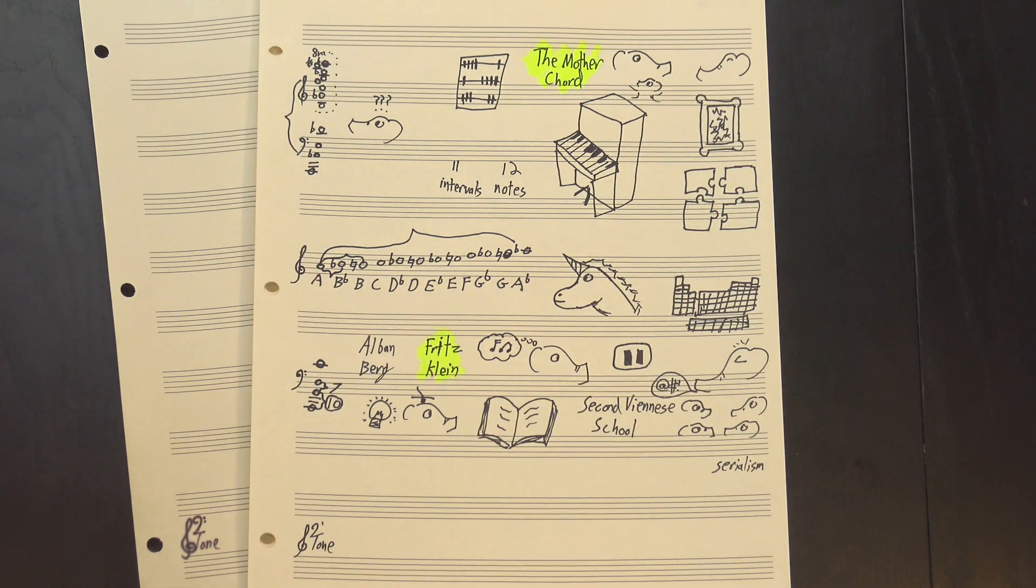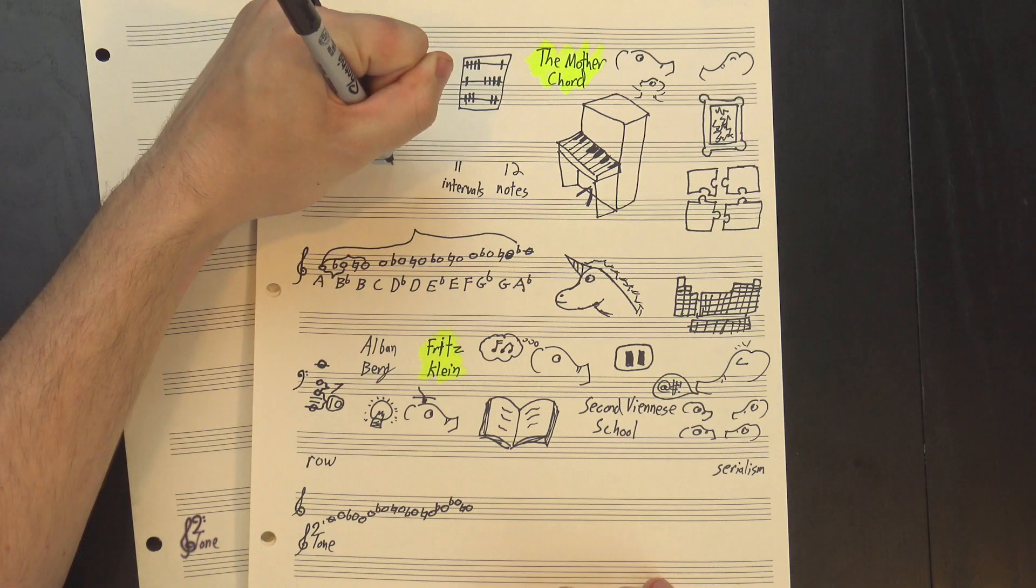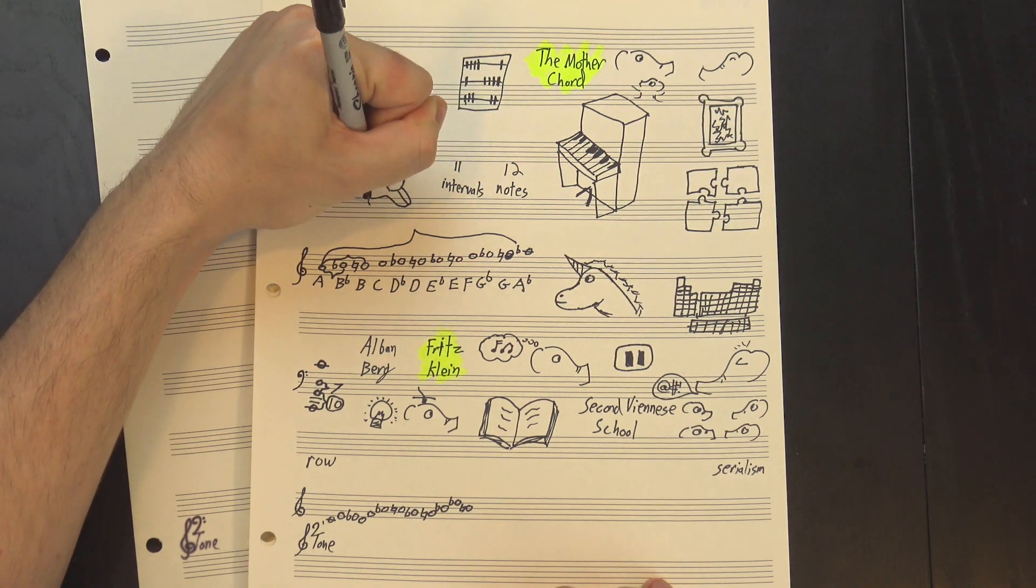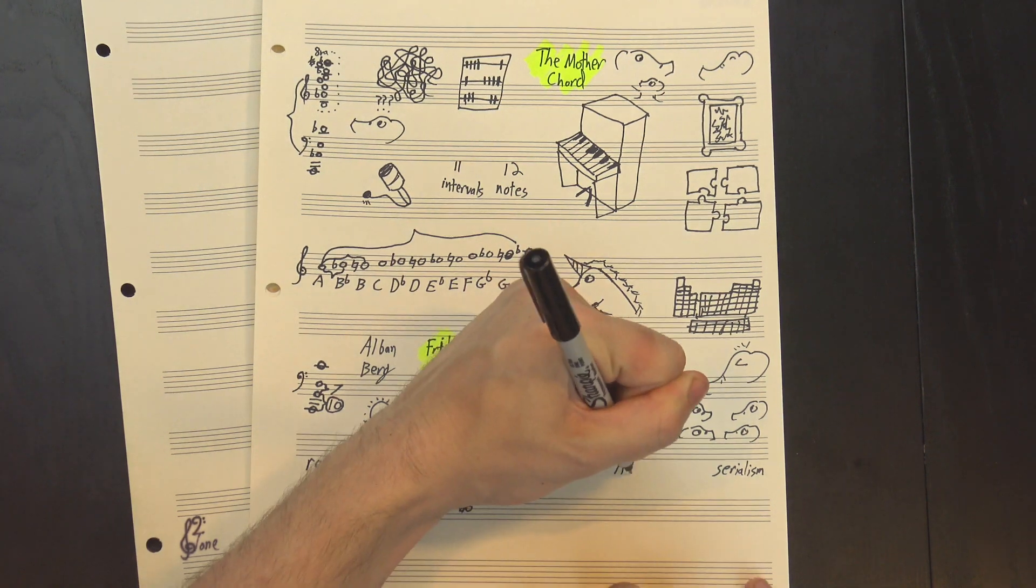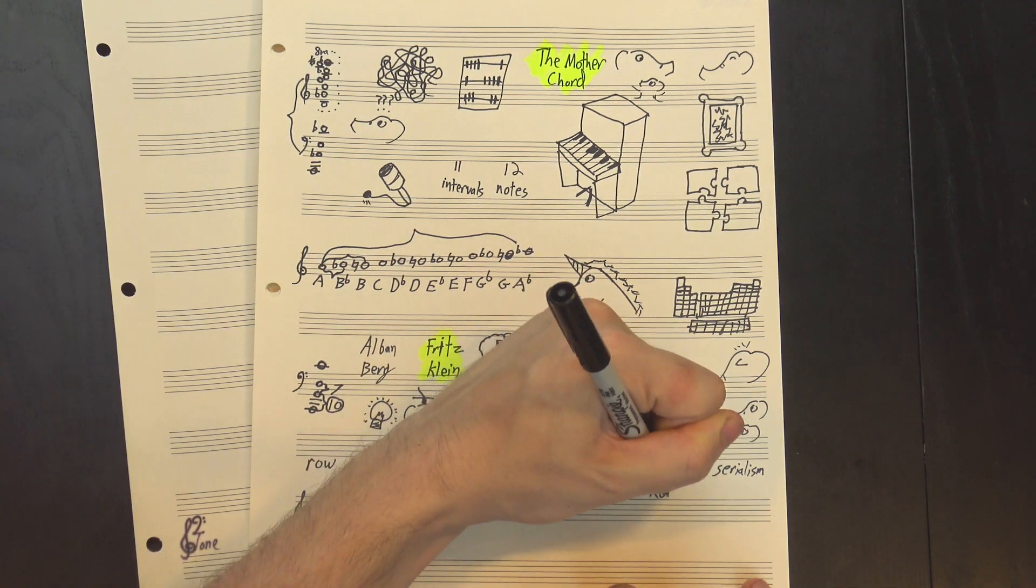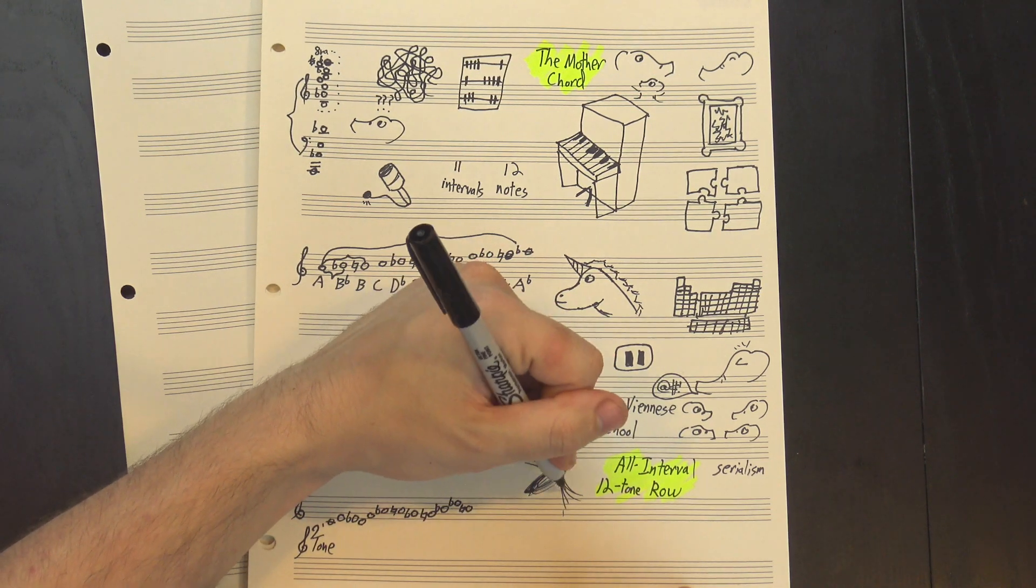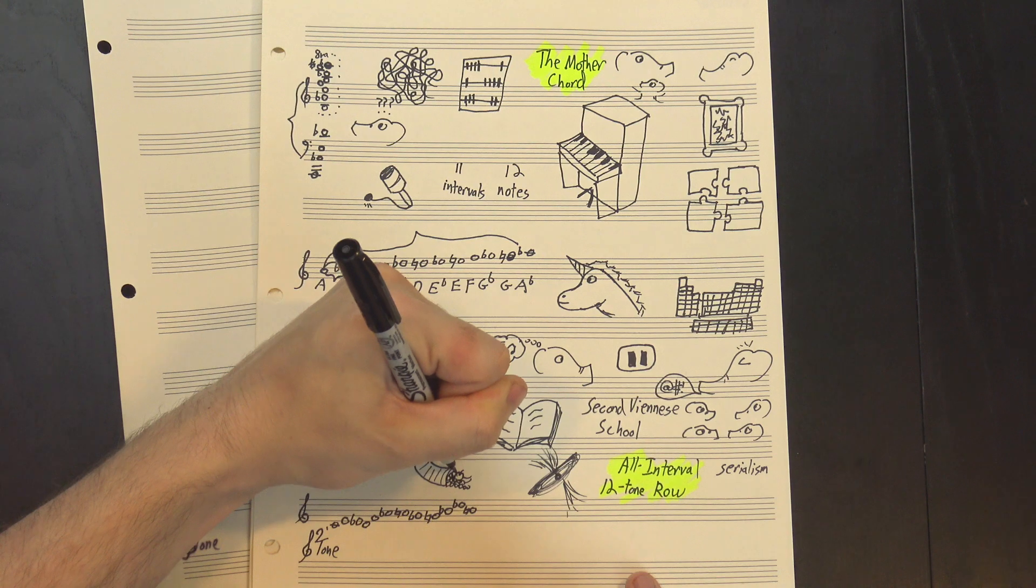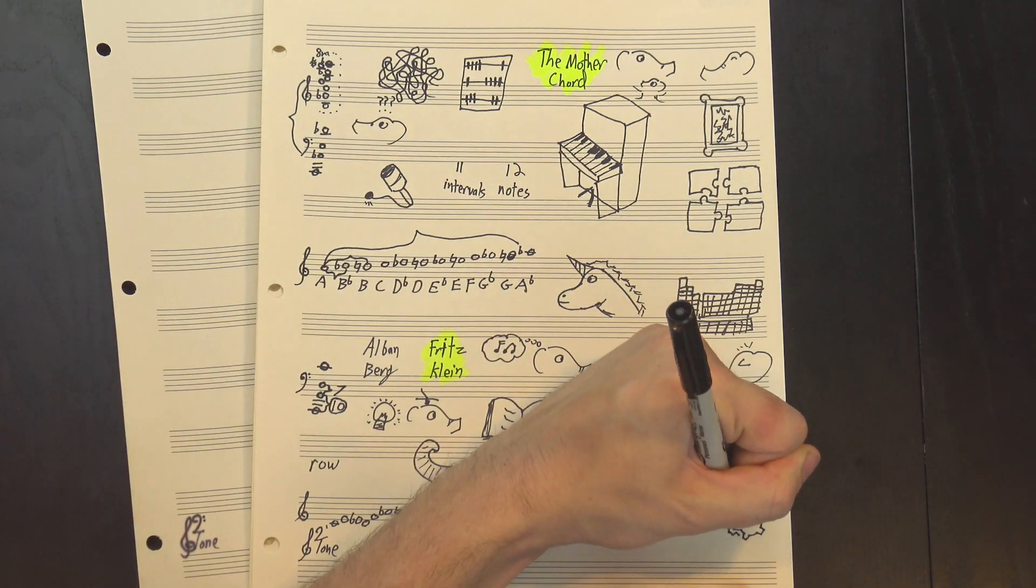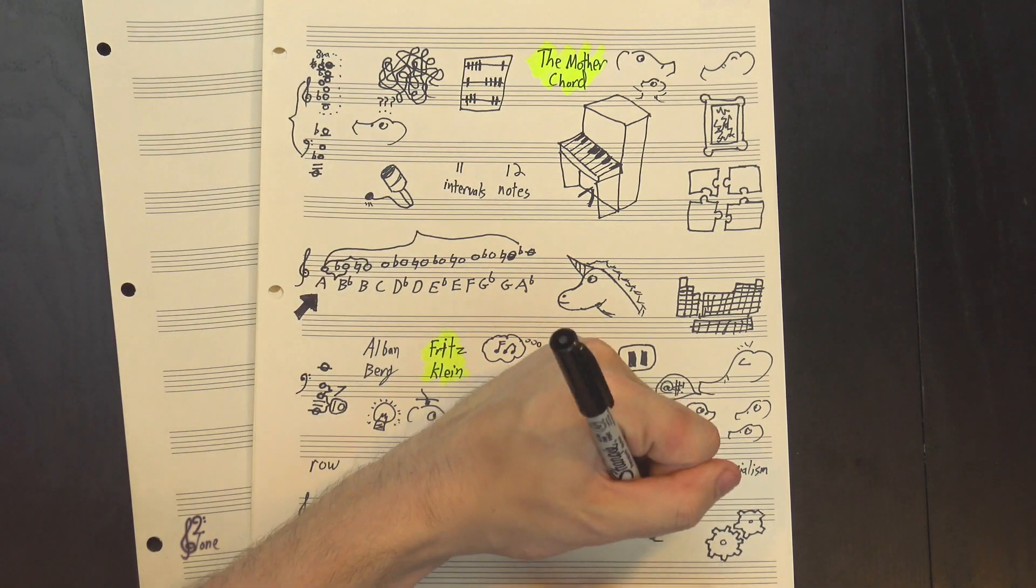You see, serialism is built around a concept called a row, which is an arrangement of notes, usually all 12, which the composer plays around with in various limited ways in order to create an entire piece of music from a single line. So the goal here was to find what we might call an all-interval 12-tone row in order to create what Klein described as the boundary of chord building possibilities. In effect, he claimed that if you could make a chord that had all the notes and all the intervals, it would have to be the most complex possible chord, and within the confines of our standard 12-note system, he's probably right.